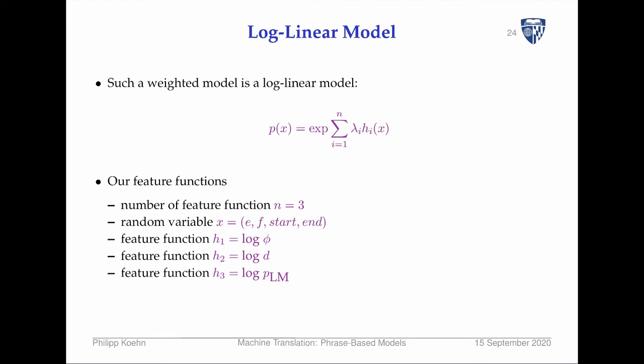We take the log of the language model — we already had examples of that in perplexity computation. The log of the distortion model, the log of the phrase translation model. When these are all logs, the weights become additive factors. So if you take the log of a probability raised to a power, the exponent becomes a multiplicative factor in log space.